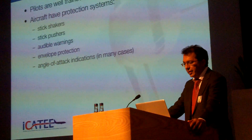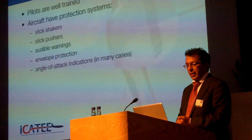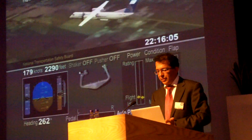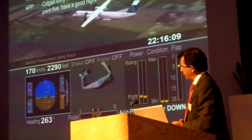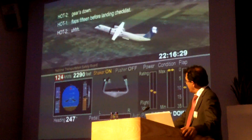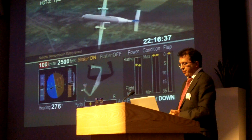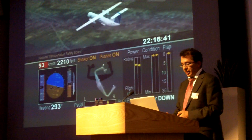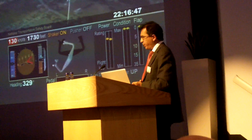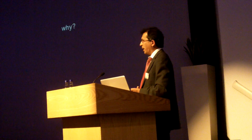Pilots are well trained. Aircraft do have protection systems — stick shakers, stick pushers, audible protection, and angle of attack indications in many cases. So what is going wrong? The Q400 of Colgan Air making its final approach to Buffalo in 2009 entered a stall where the pilots were unaware, did not recognize the developing situation, fought the automation because of programmed instincts and limitations of their licensing training, and ended up in a very difficult position. They fought the system and were not able to apply the right recovery techniques. The question is: what is going on and why are we still seeing these events today?